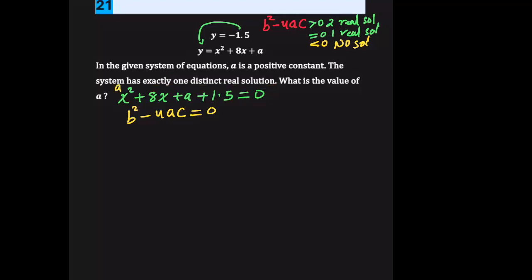So the coefficient of x squared is a, and b is 8, that coefficient. And c, that whole term is going to be c.